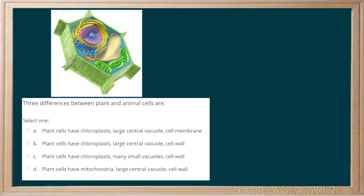Three differences between plant and animal cells are: A. Plant cells have chloroplasts, a large central vacuole, and a cell membrane.